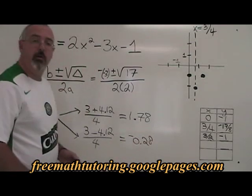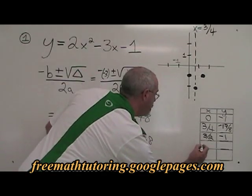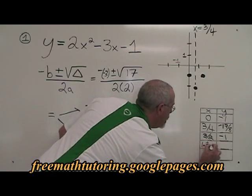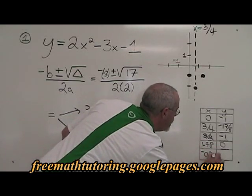These are our x-intercepts and we will put them in the table right here. 1.78, 0 and negative 0.28, 0.